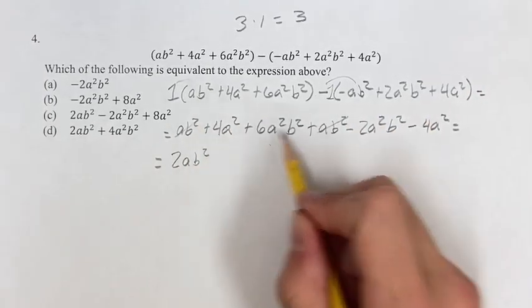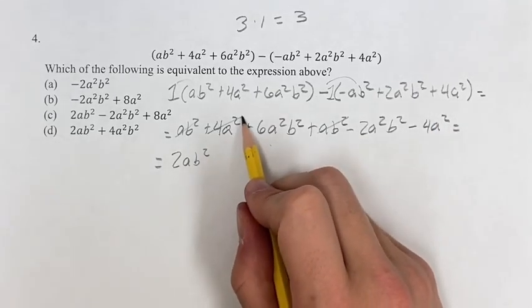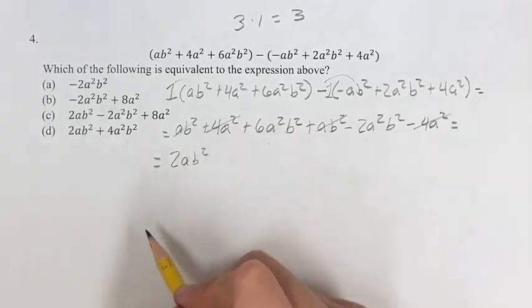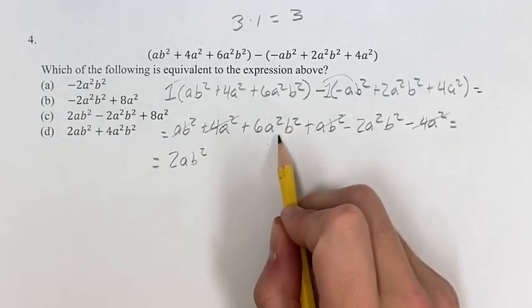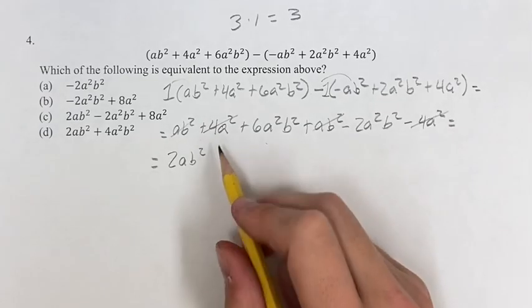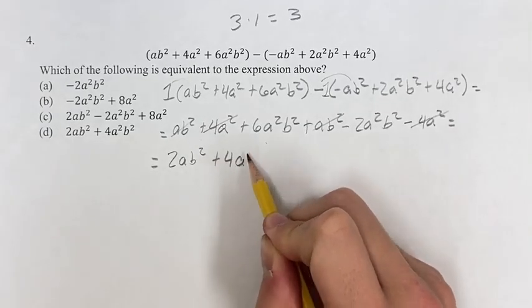Then we have 4a² minus 4a² is 0a². We would have plus 0, but that's not going to change the value of anything, so we don't have to write it. Then last, we have 6a²b² minus 2a²b², which is going to be plus 4a²b².